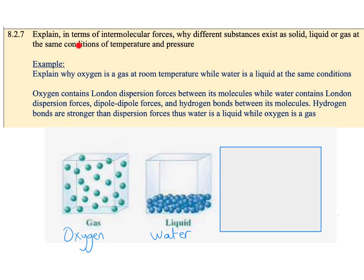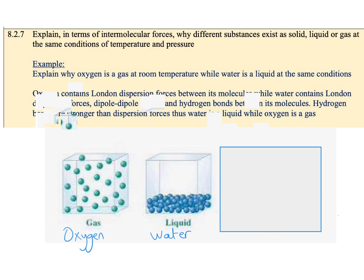For the last objective: explain, in terms of intermolecular forces, why different substances exist as solid, liquid, or gas at the same conditions of temperature and pressure. For example, oxygen is a gas at room temperature while water is a liquid. Oxygen contains only London dispersion forces between its molecules, while water contains London dispersion forces, dipole-dipole forces, and hydrogen bonds. The dipole-dipole forces and hydrogen bonds are stronger than dispersion forces, making water particles closer — hence it's a liquid — while oxygen molecules cannot be very close, so they remain as a gas.